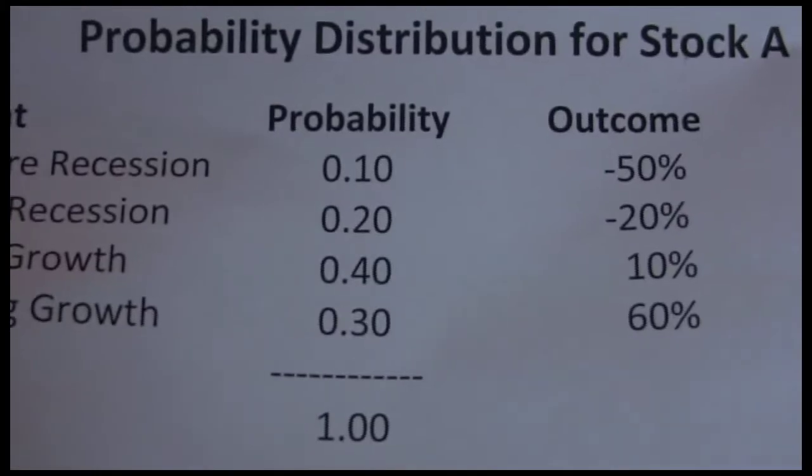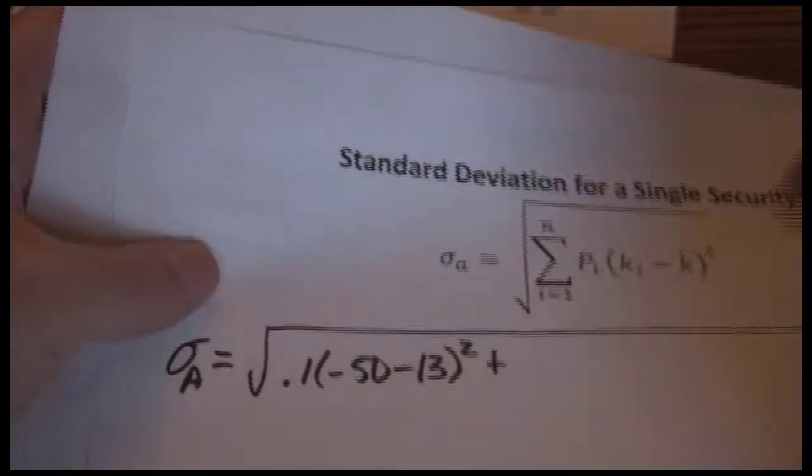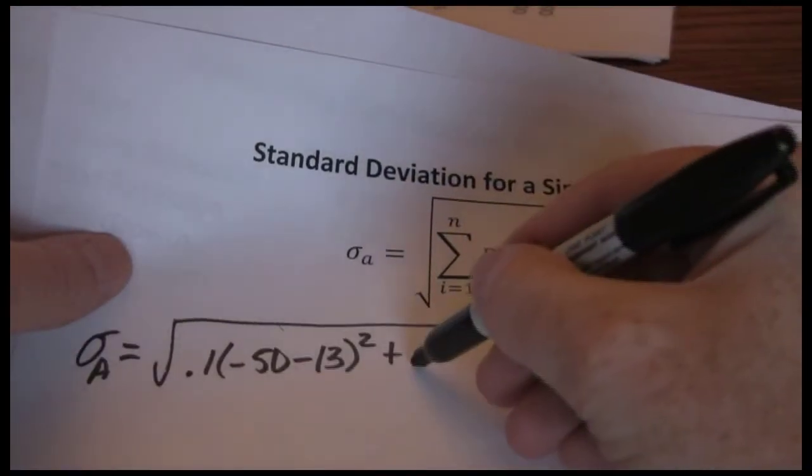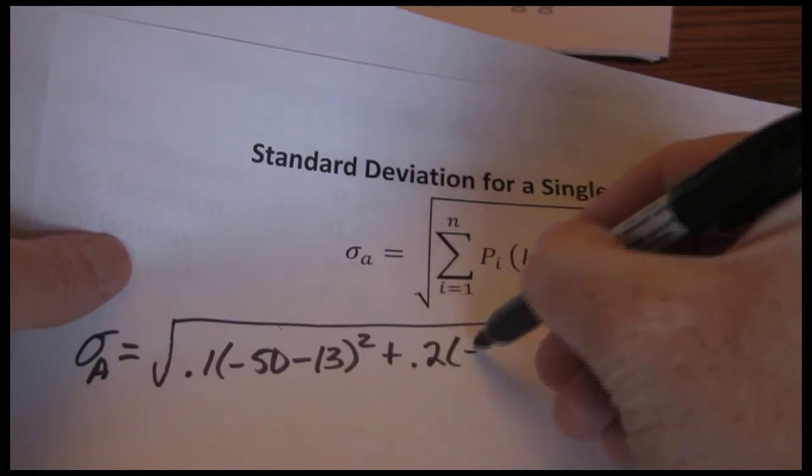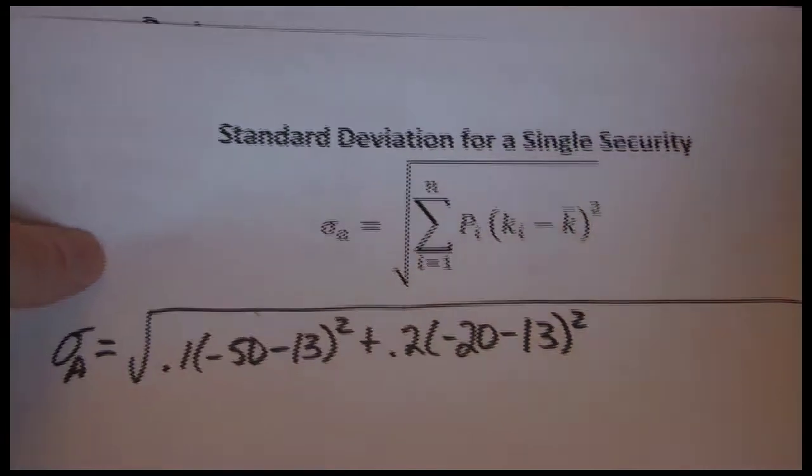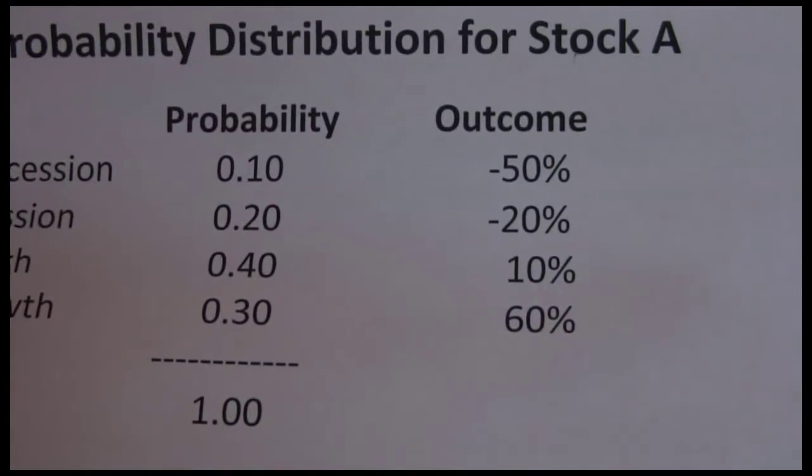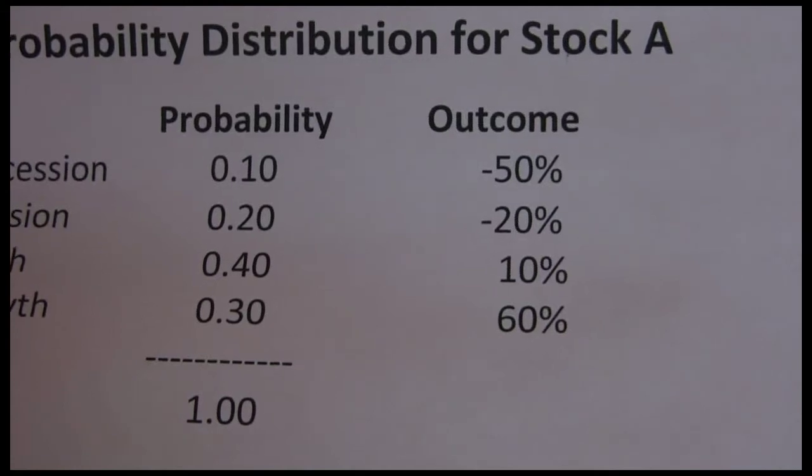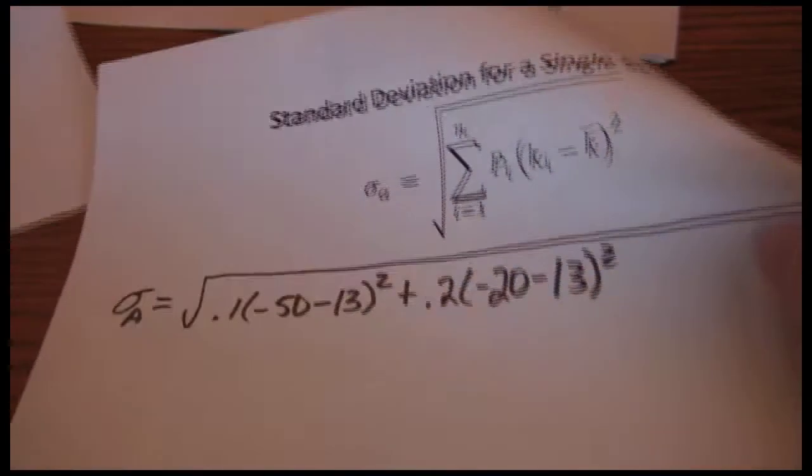Move on to our next possible outcome. We've got a .2 probability and a negative twenty percent return. So we have .2 times negative twenty minus thirteen squared.